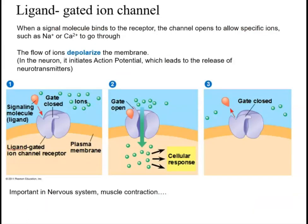Another example of a cell surface receptor is the ligand-gated ion channel. A signaling molecule binds to a channel that is normally closed. When the signaling molecule binds, it causes the channel to change shape and open up, allowing ions to flow through. Those ions then trigger a particular cellular response — for example, calcium diffusing in is required for muscle contraction. When the ligand is removed from the channel, the gate closes, preventing the flow of ions.